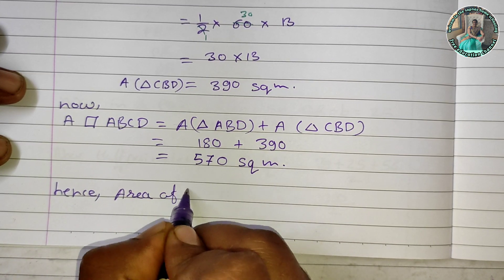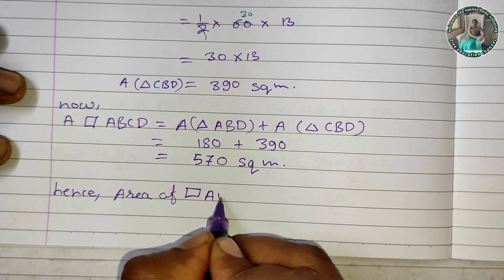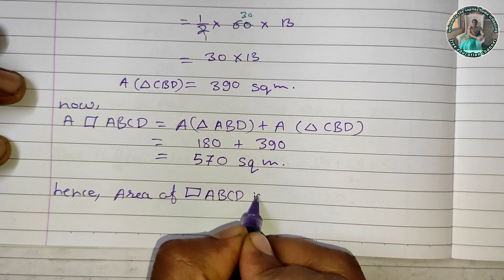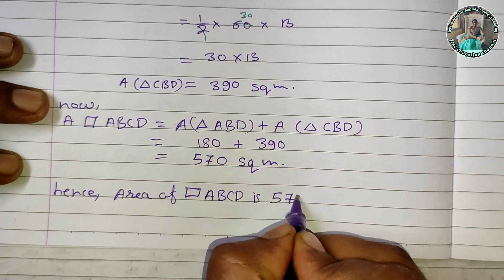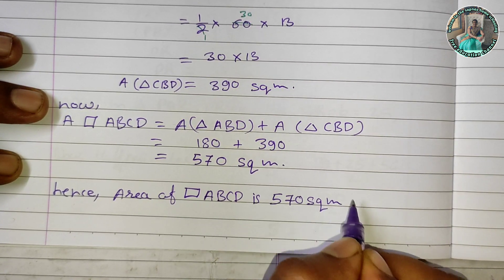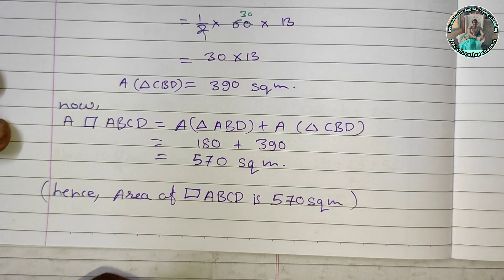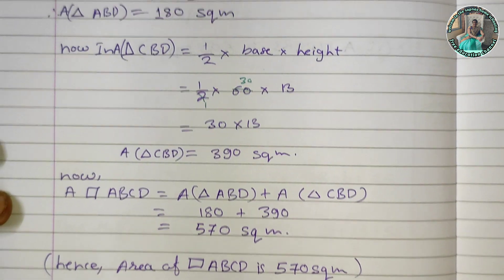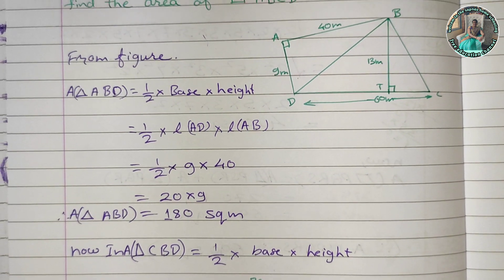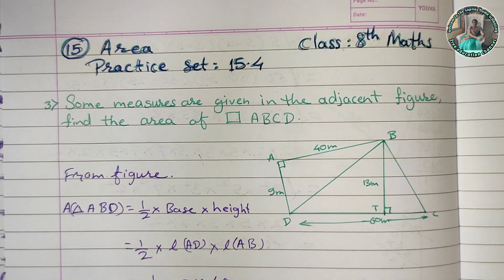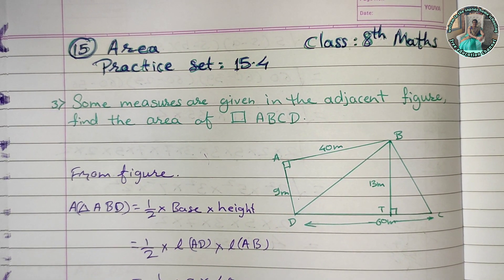Hence, area of quadrilateral ABCD is 570 square meters. Okay friends, next video. Please subscribe to Sapna Zoom Screen channel and press the like button. Thank you very much.